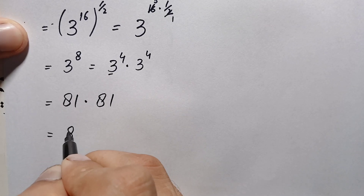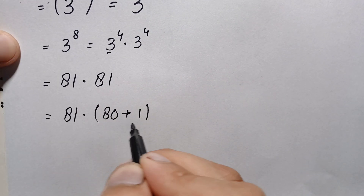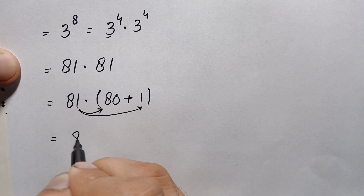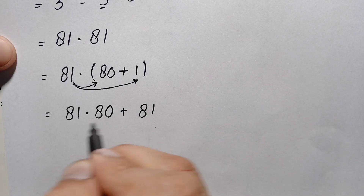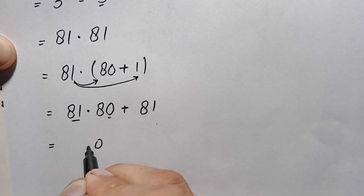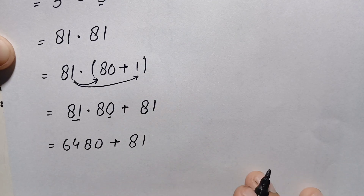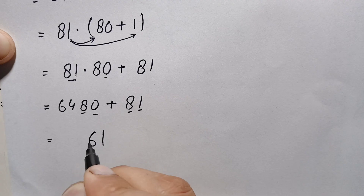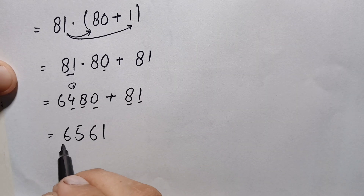We multiply 81 times 81 without any error. We write 81 as 80 plus 1, then multiply: 81 times 80 plus 81 times 1. So this gives 81 times 80 plus 81. Now 81 times 0 is 0, and 81 times 8 is 648, giving 6480. Adding 81: 0 plus 1 is 1, 8 plus 8 is 16 carry 1, 4 plus 1 plus 1 is 6, and 6 remains 6. The result is 6561.